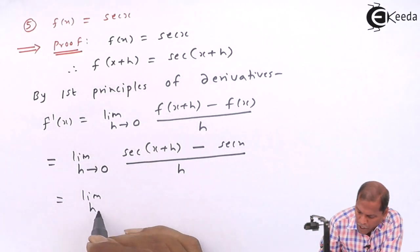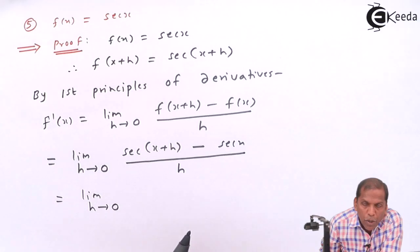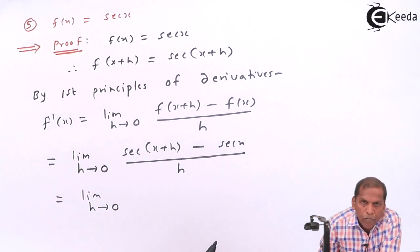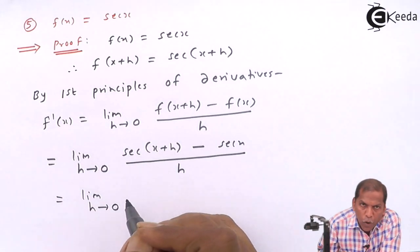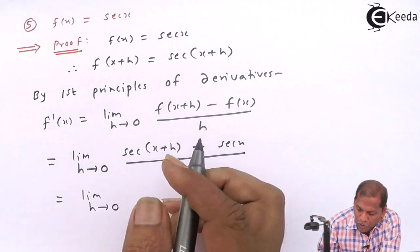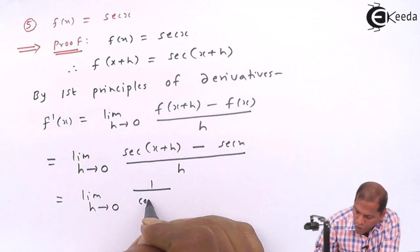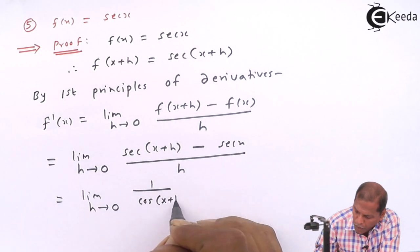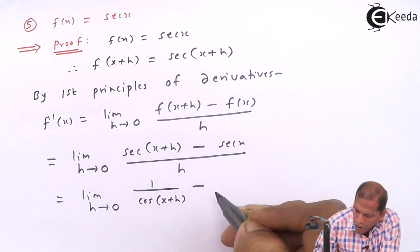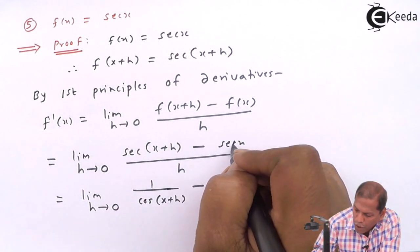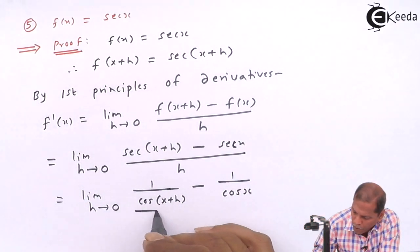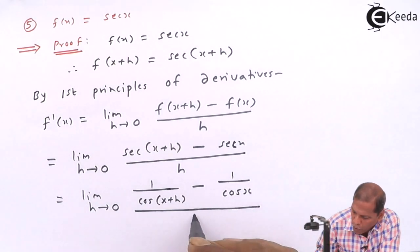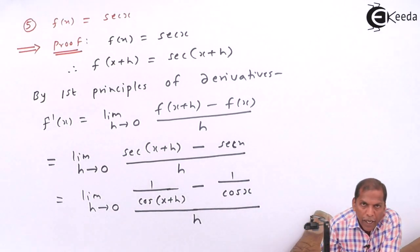So that is equal to limit h tends to 0. Now here for sec(θ) we apply the trigonometric formula that sec(θ) equals 1 upon cos(θ). Therefore sec(x + h) can be written as 1 upon cos(x + h), minus for sec(x) we write 1 upon cos(x), and then the whole thing divided by h.